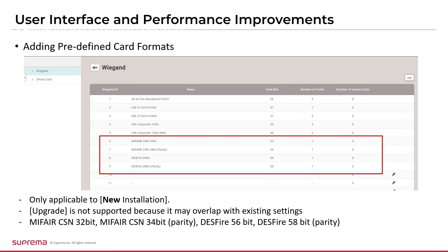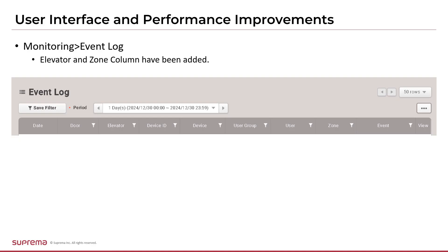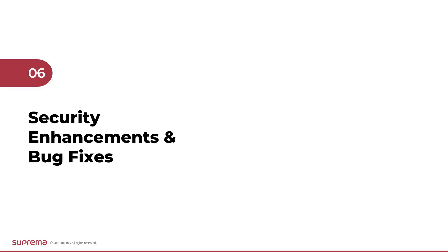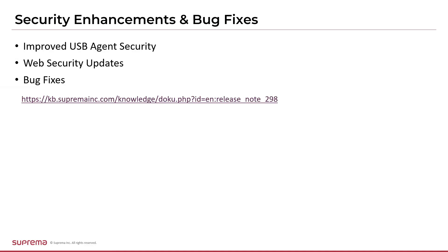The predefined Wiegand card format menu is a feature that is only supported under the conditions of a newly installed environment. When upgrading from an older version to version 2.9.8, it may conflict with the previously set custom Wiegand format settings, so it is not supported for upgrades. On the event log page in the monitoring menu, elevator and zone columns have been added to help you view event logs more clearly and create filters. Suprema Biostar 2 continues to strengthen security and fix discovered bugs with each new version update. This version 2.9.8 has improved USB agent security, updated web security, and fixed many other bugs. Detailed revisions can be found in the revision notes on the Suprema Knowledge Base site, or on the page where you download the Biostar 2 installation file from the Suprema Download Center.